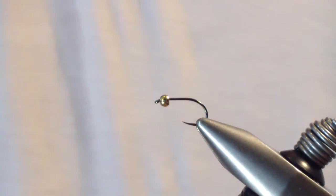Today we're going to tie the Frenchie. The Frenchie is the European version of what we would consider a hot spot pheasant tail. It's an excellent all-around nymphing pattern. It's got a great trigger point. It does very well pretty much anywhere I've fished it. Let's go over how we tie it.